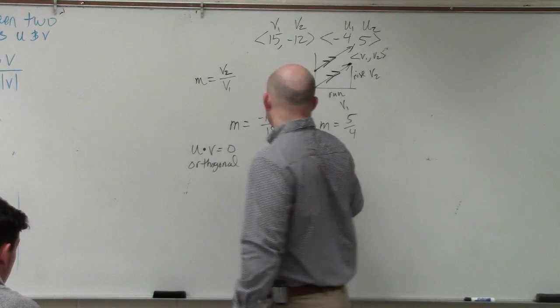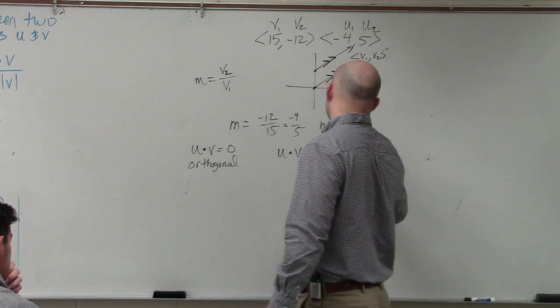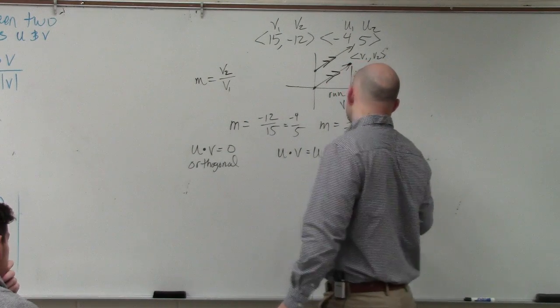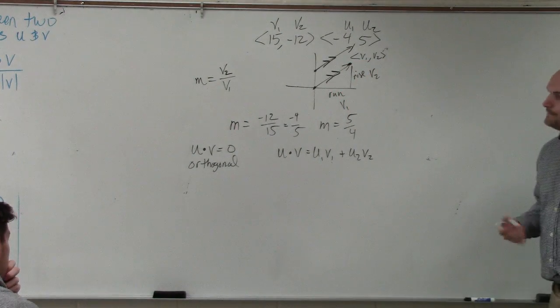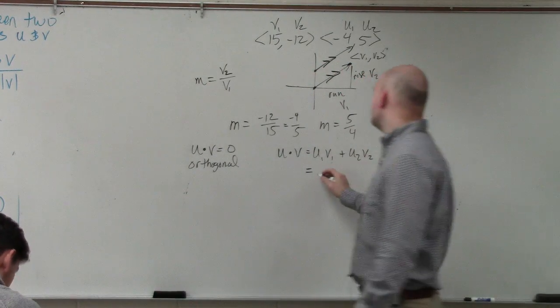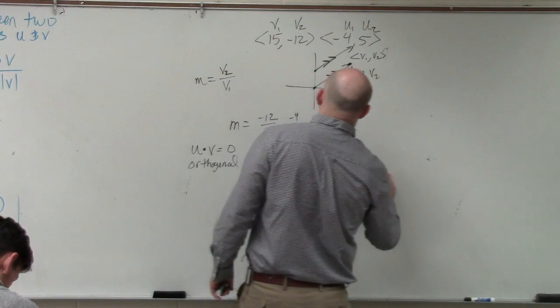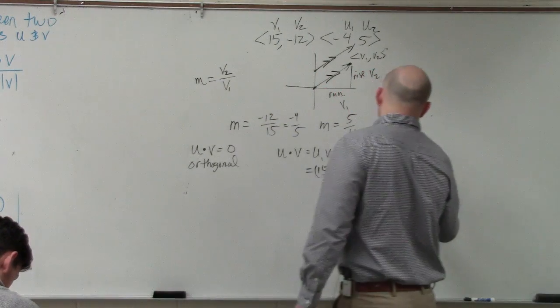So remember the dot product? u dot v is equal to u1 times v1 plus u2 times v2. So therefore, you can go ahead and show here. You could do 15 times negative 4 plus negative 12 times 5.